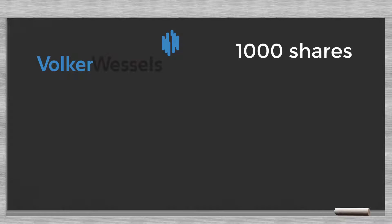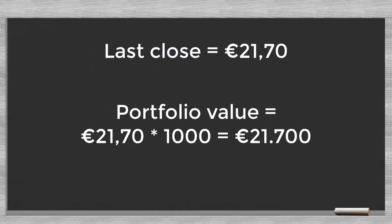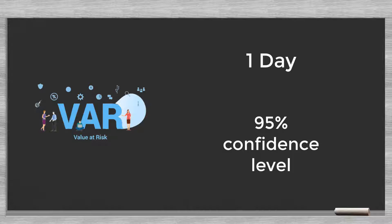Say our bank holds a portfolio of just one stock — a thousand shares of KVW. The last known closing price for 31 March 2020 is €21.70, so the portfolio value is €21,700. Now we would like to know the one-day VAR with a confidence level of 95%.